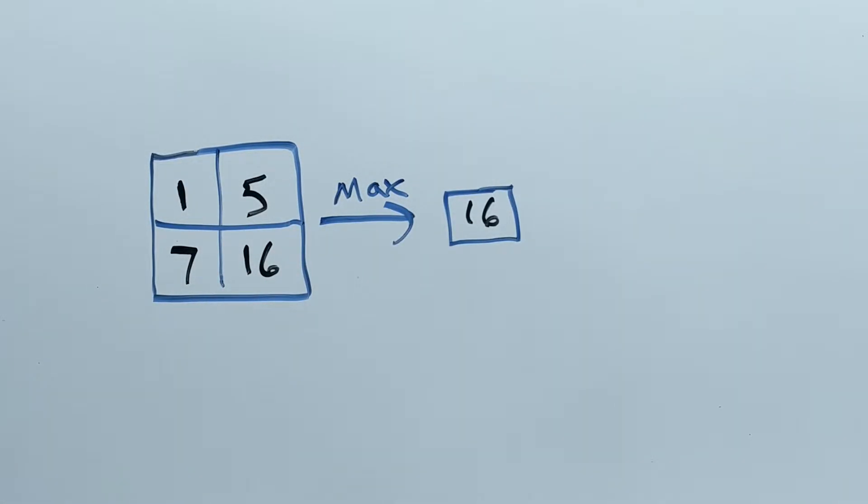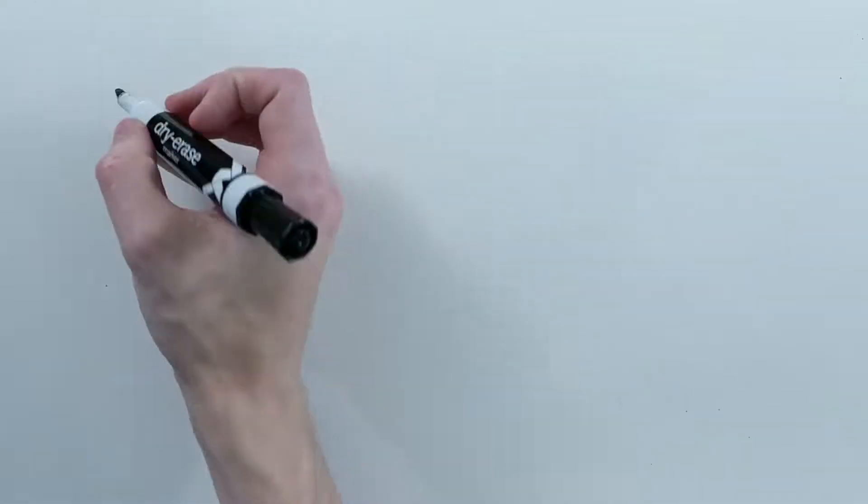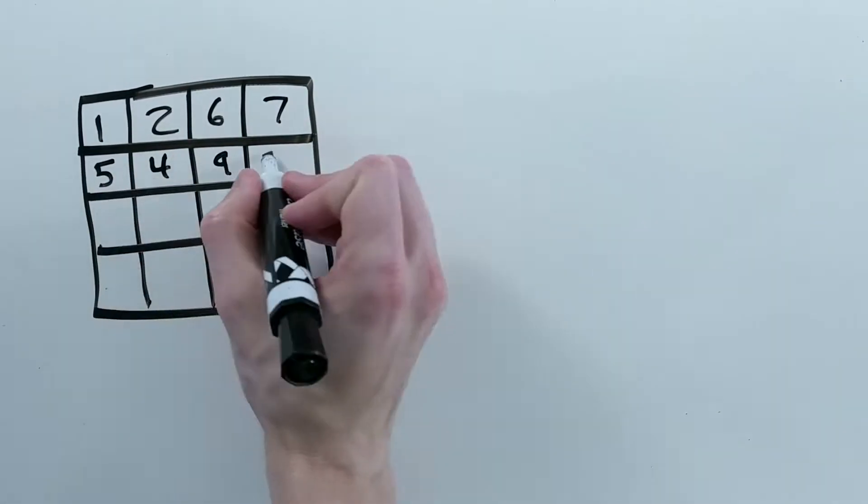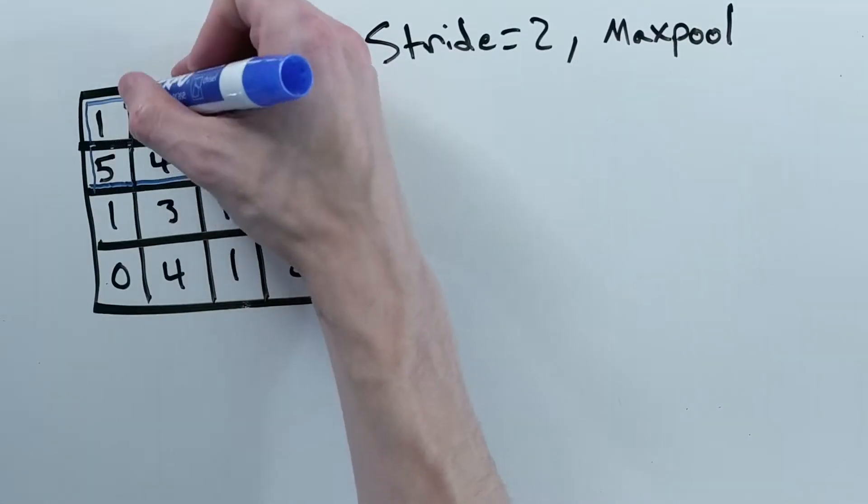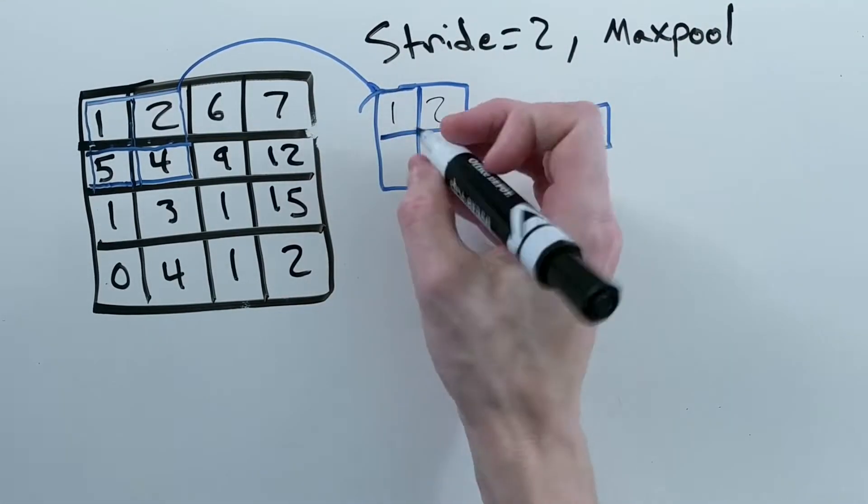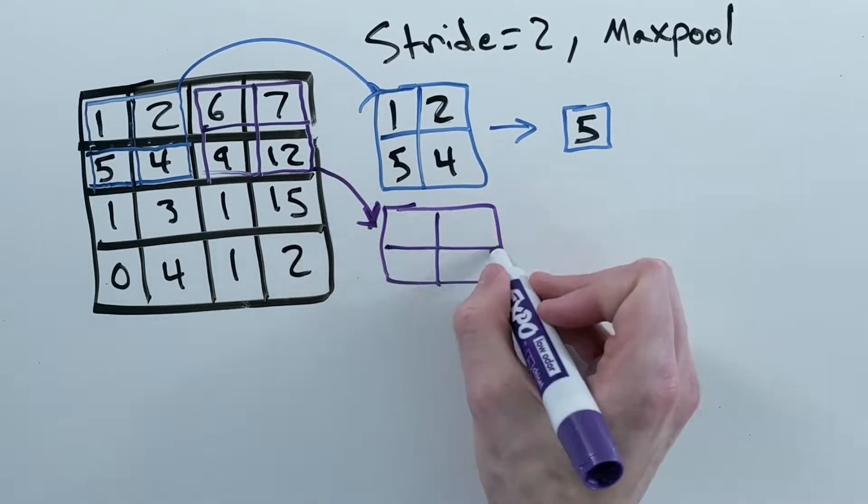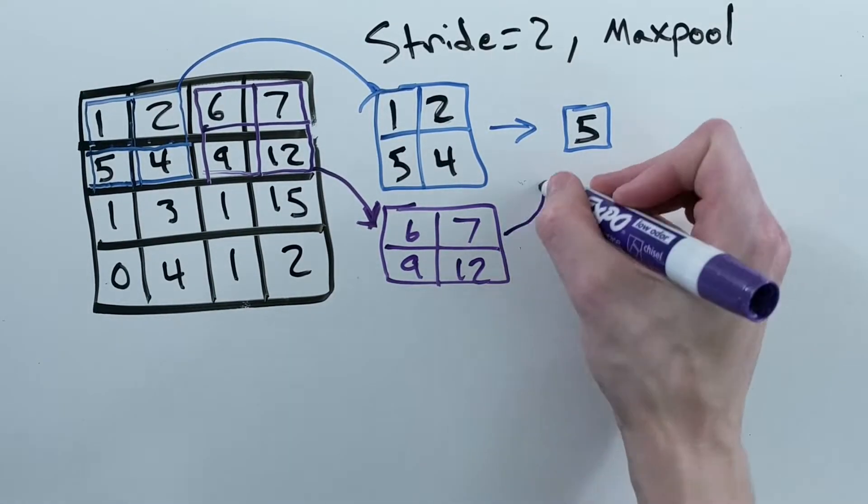Two common operations are max and average. So if you have a 4x4 matrix with a 2x2 filter size with a stride of 2 and max pooling, all you are doing is looking at each 2x2 block in the input and getting the maximum value.